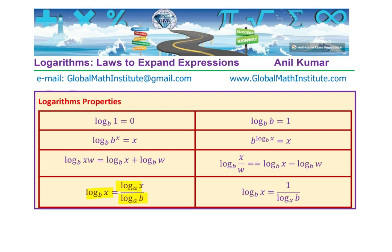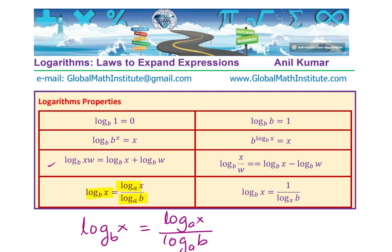So basically, if you want to change the base — log to the base p of x to some other base a — you can write in the numerator log to the base a of x, divided by log to the base a of p. You get the same base, and then using the other properties of logarithms, you can solve the logarithmic equation.